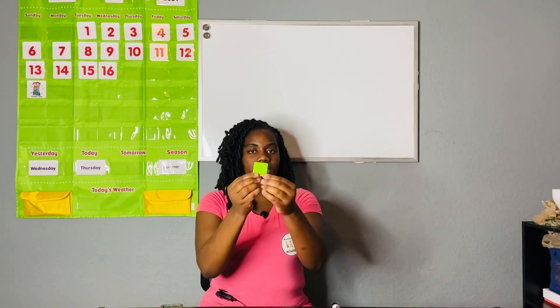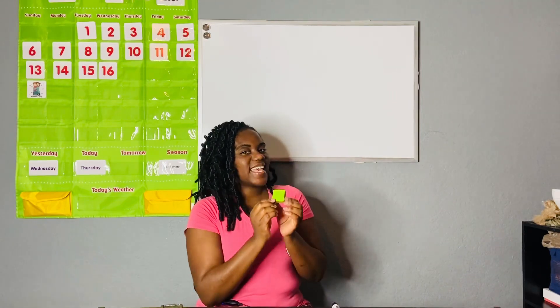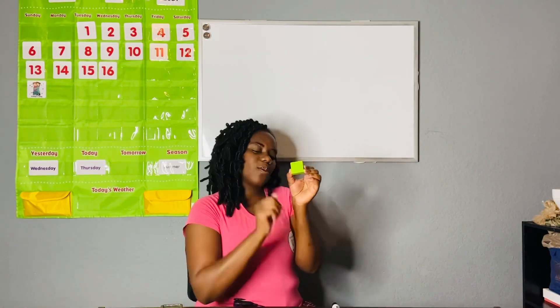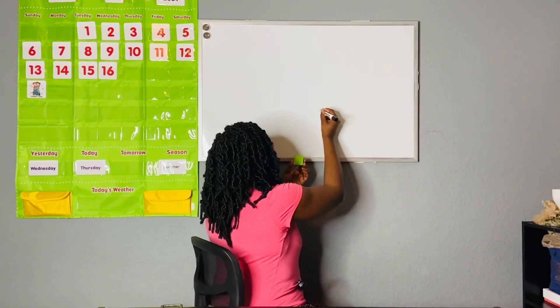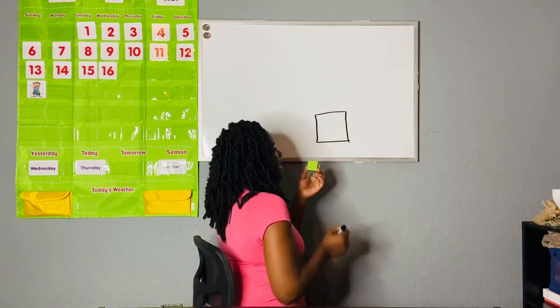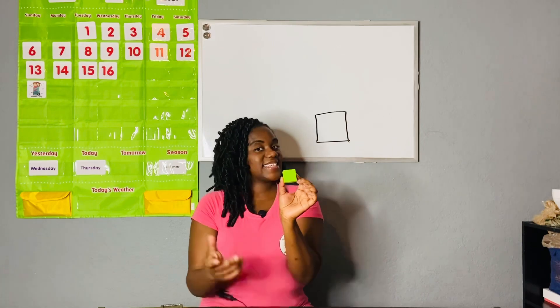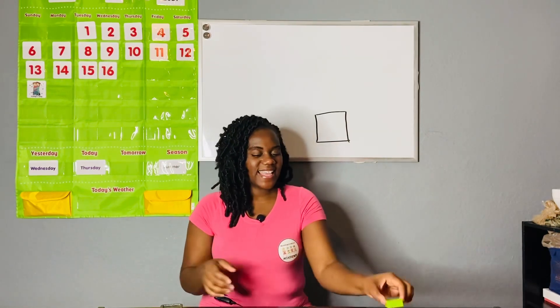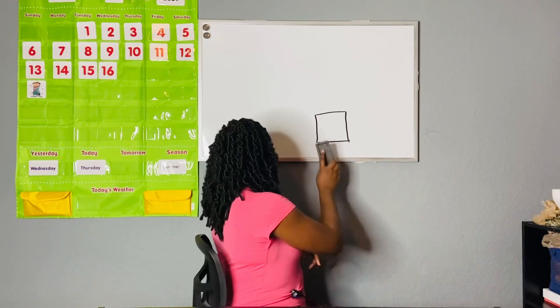Our next shape — what do we call the shape that looks like a box? Did you say a square? If you said square, you are correct! Help me draw a square. That is a square — it looks just like a box.